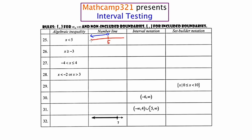In interval notation, we would read this blue answer line from left to right. The blue points all the way to the left, which is known as negative infinity. So I'm going to write negative infinity, and then the blue continues on until it gets to 5, and then it ends. I'm going to use a parenthesis here. Had this been a closed circle, I would have used a bracket. But because it's open, I use a parenthesis. And here are the rules.